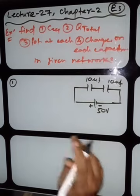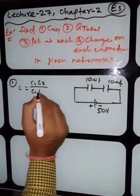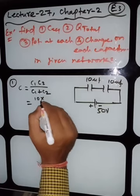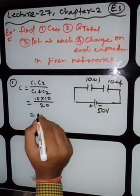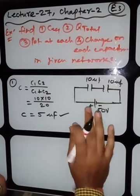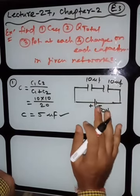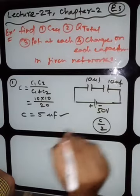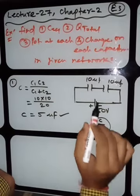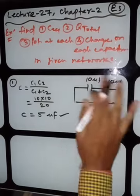First you can find the equivalent capacitance. The formula for series is C equivalent equals C1×C2 divided by C1+C2. So C1×C2 is 10×10 by 20, that is 10 by 2, which is 5 microfarad. For two identical capacitors we can also use the formula C/2 directly, so 10 by 2 gives 5 microfarad. In an examination you can write this directly.